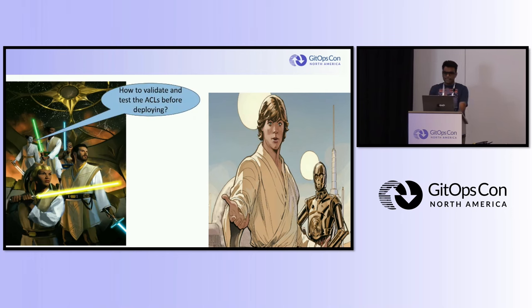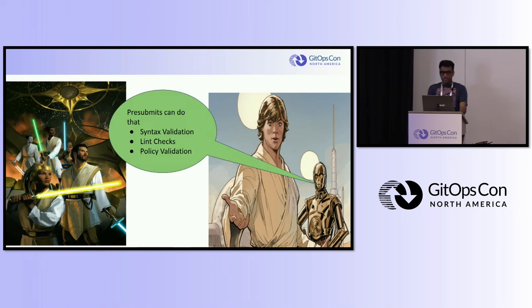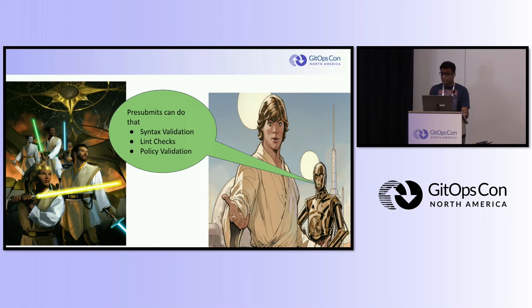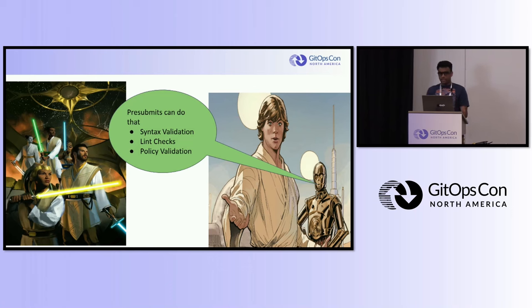Now that we know how to generate ACLs, how do we test and validate them before deploying? The answer is pre-submits. At a minimum, you should have the following pre-submits in your ACL pipeline: first, syntax validation to ensure that ACL policy definitions and generated configurations are syntactically correct and free of errors; second, lint checks to enforce coding style guidelines; and third, policy validation to verify that ACL policies align with the organization's security guidelines and comply with regulatory requirements.